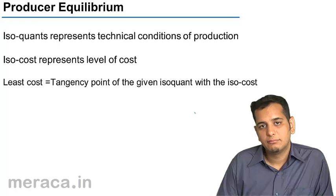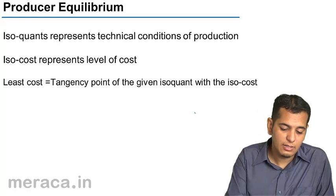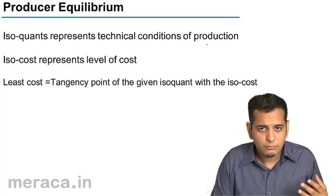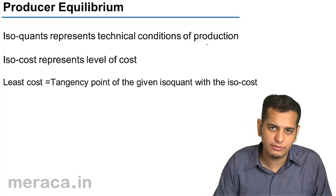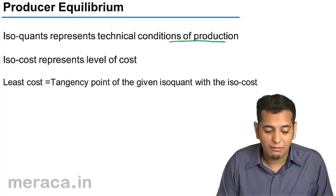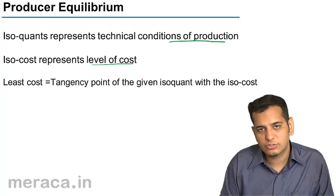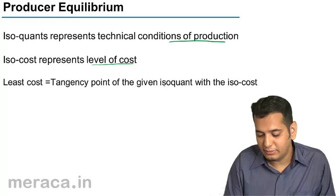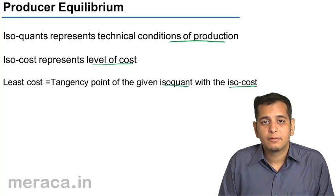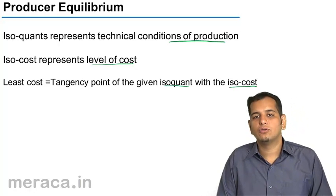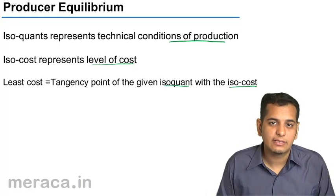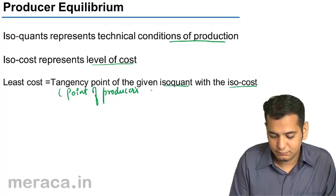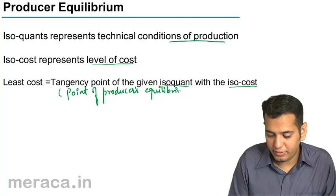Now let's understand producer's equilibrium — its characteristics and properties. Iso-quants represent technical conditions of production; they give you the proportion and combination of the factors of production. However, the iso-cost represents the level of cost. The least cost is the tangency point between the iso-quant and the iso-cost — where the iso-quant curve is tangent with the iso-cost line, we can say that the cost is least. This is the point of producer's equilibrium, where the cost is least or minimum.